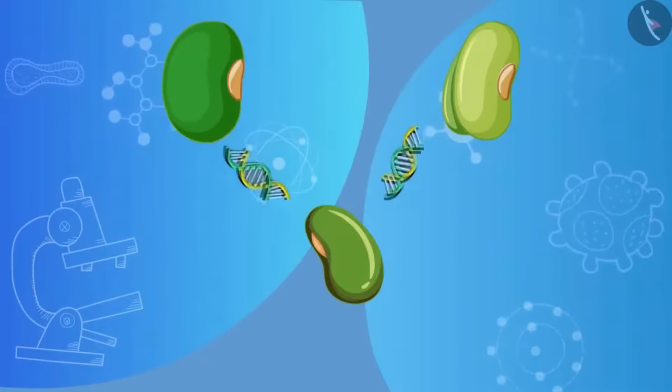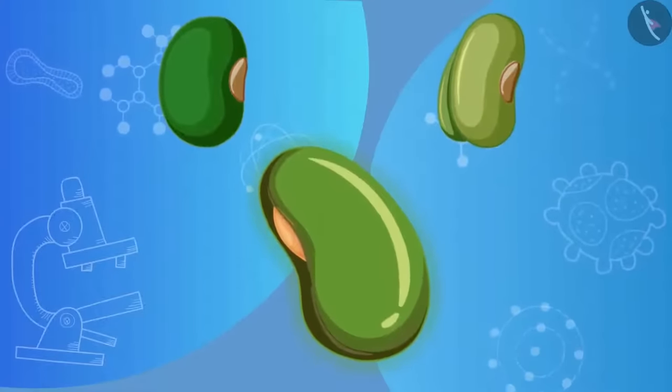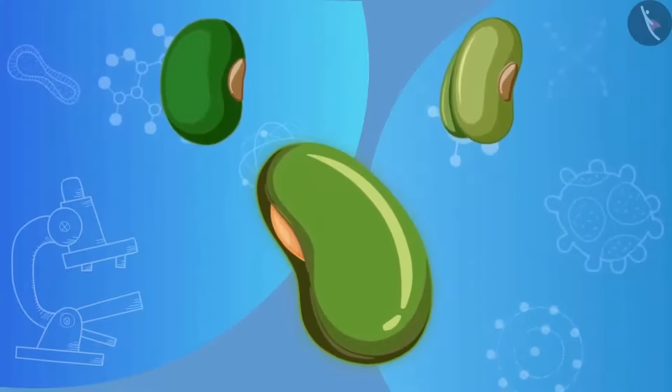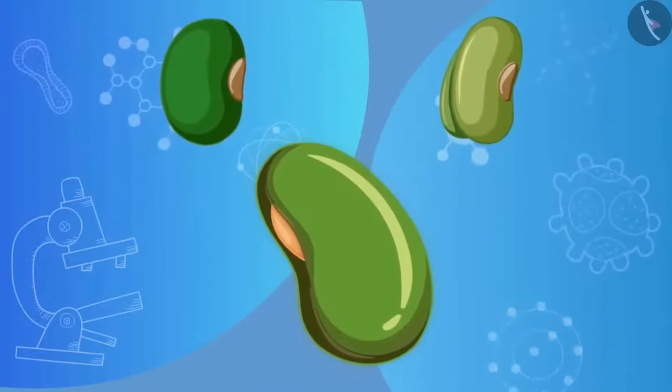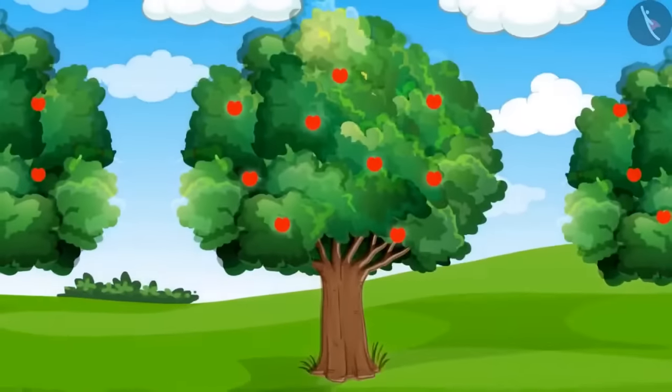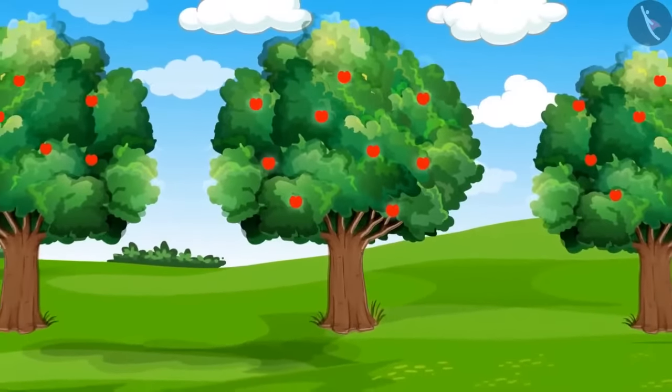In this method, scientists treat the seeds of both plants in a scientific manner and create a new seed which has the desired properties of both the seeds. So what kind of tree will it be with new seeds? High yield and high resistance towards diseases.